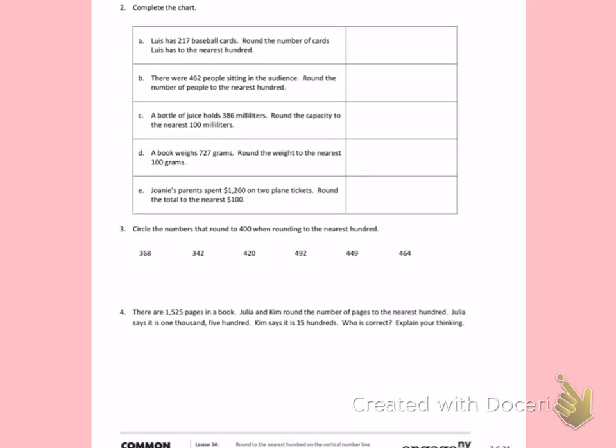Luis has 217 baseball cards. Round the number of cards Luis has to the nearest hundred. I'm thinking about the number 217, picturing a number line in my head. If you need to draw a number line, you should do that. I know 217 is between 200 and 300. 217 is not past the halfway number 250, so 217 is about 200.